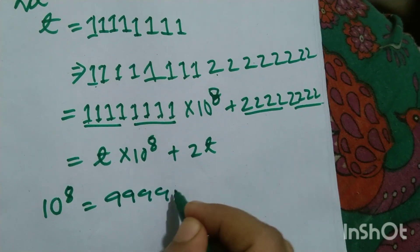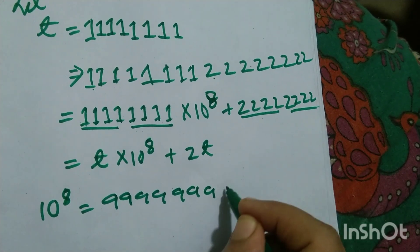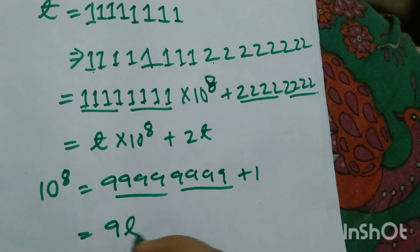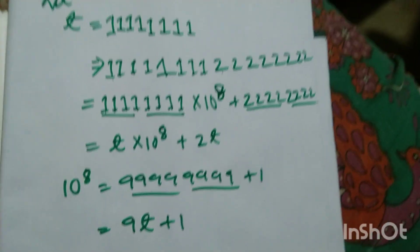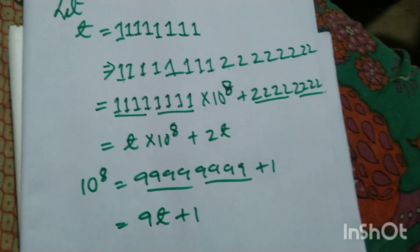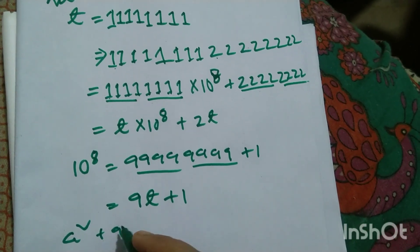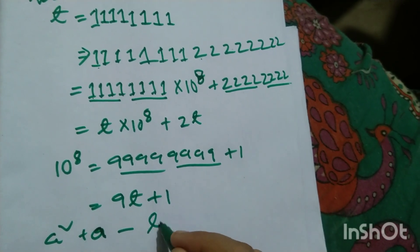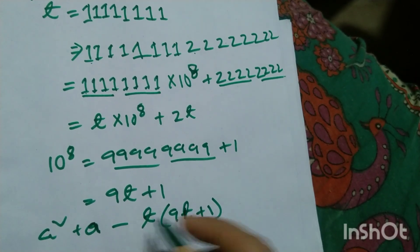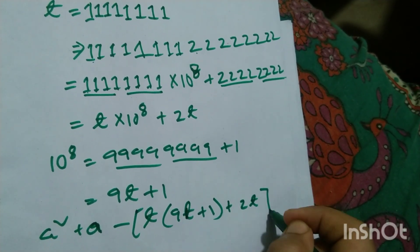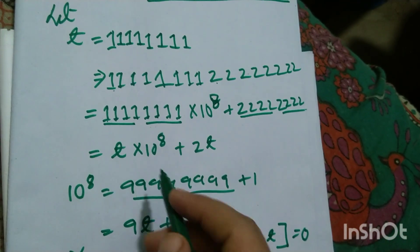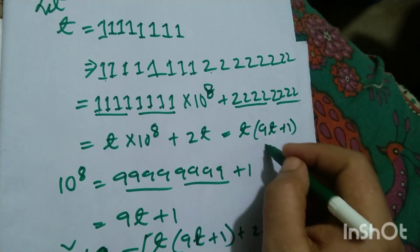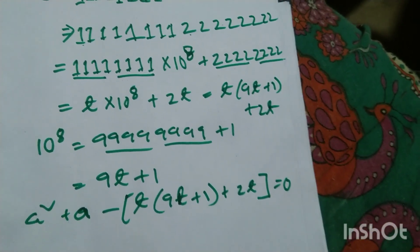We have 9 9 9 9 9 9 9 9 9 9 — that is ten 9s — plus 1, so it is 9 into t plus 1. So you see that a squared plus a minus t into 9t plus 1, plus 2t equals zero, because 10 to the power 8 can be written as t into 9t plus 1 plus 2t.